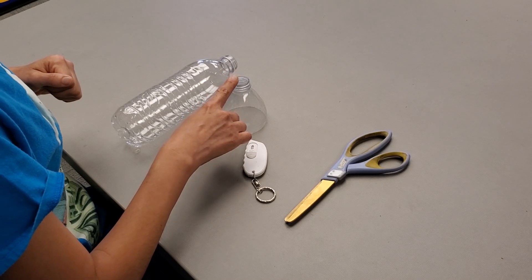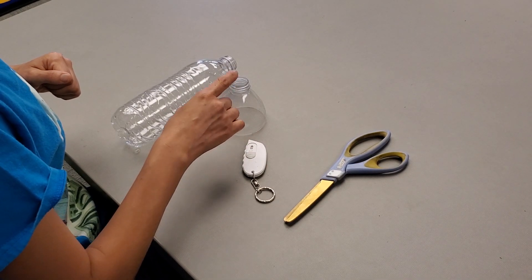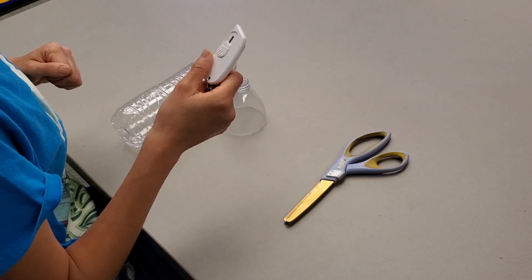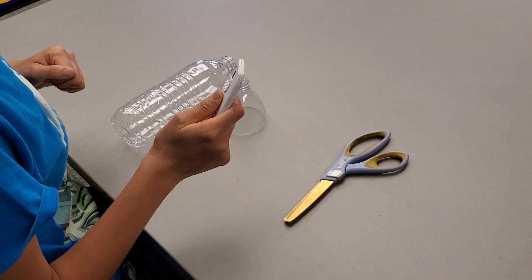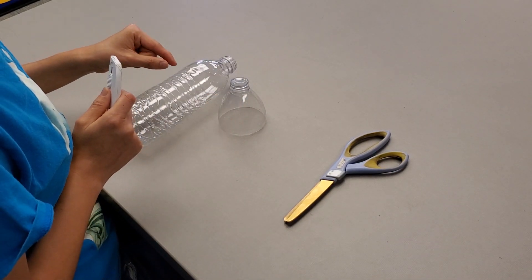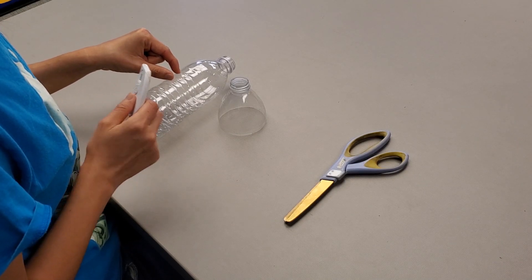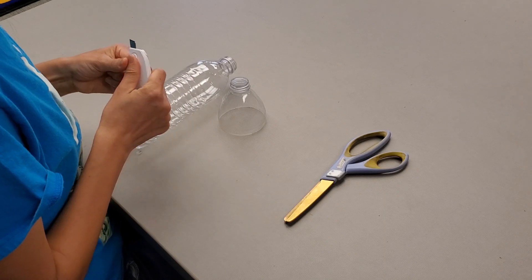We'll need the top part of the water bottle, and we'll need the help of your parents. Using a box cutter or a knife, you will cut below the first line a hole big enough for your scissors to go through.